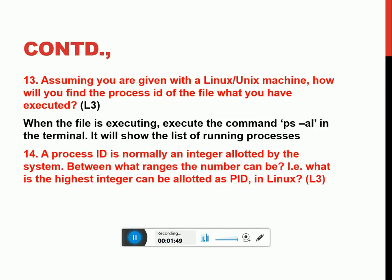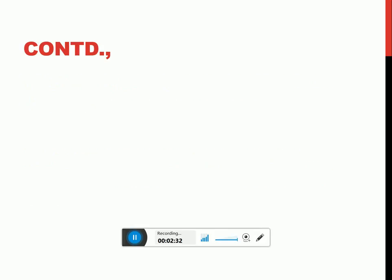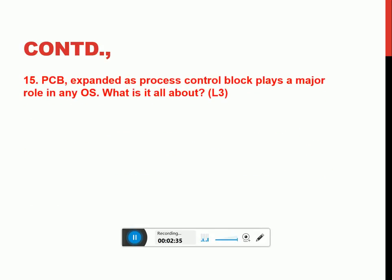Your process ID is normally an integer allotted by the system. What is the highest integer that can be allotted as a process ID in Ubuntu (Linux)? Simple — 32678. Why not 1? Because 1 is the process ID allocated to the first process called 'init'. This can be tracked from the /proc filesystem, where all running processes are listed, and 1 will be the first. So from 2 to 32678 are the IDs that can be assigned to user-created processes.